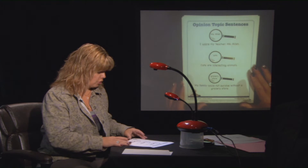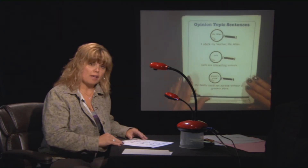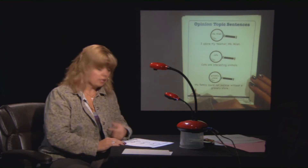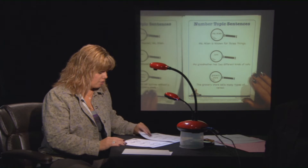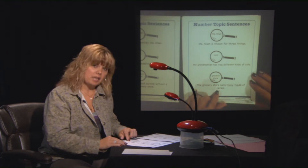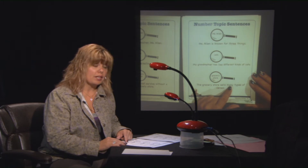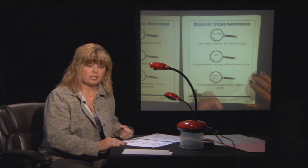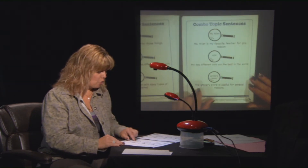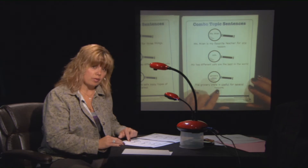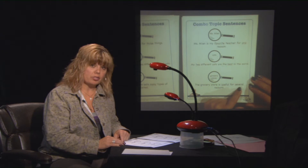The final example is the grocery store. The opinion topic sentence is: 'My family could not survive without the grocery store.' We know that in today's world it would be very hard, so that's my opinion. For number: 'The grocery store sells many types of cereal.' 'Many' is a number word that lets us know there are a lot of different kinds of cereal. And the last one is the combo: 'A grocery store is useful for several reasons.' 'Useful' is our opinion, and 'several' is the number, so you have a combo.